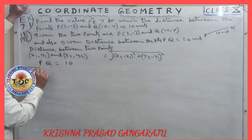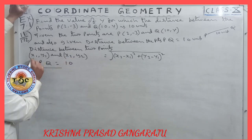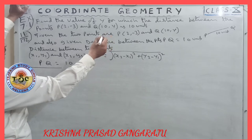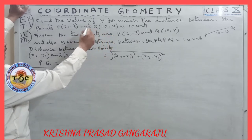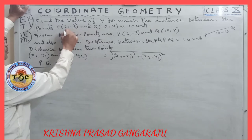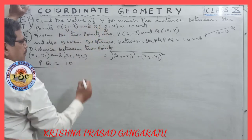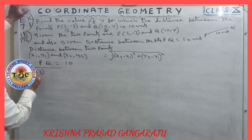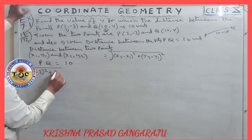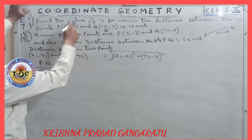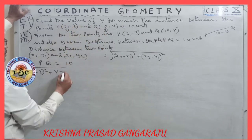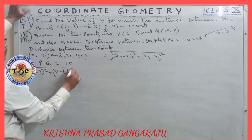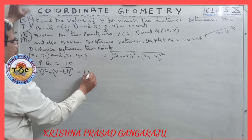Applying the distance formula: the first point is P(2, -3), so x1 = 2, y1 = -3; the second point is Q(10, y), so x2 = 10, y2 = y. Substituting: root of (10 minus 2) whole square plus (y minus (-3)) whole square equals 10.